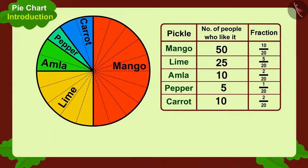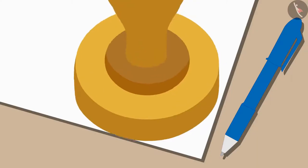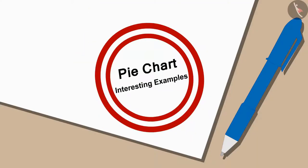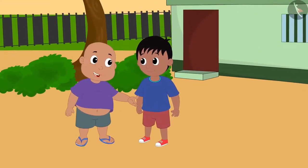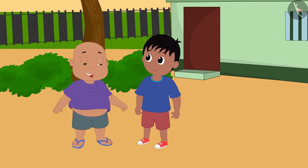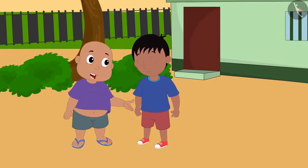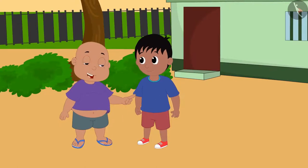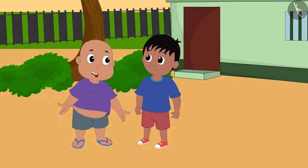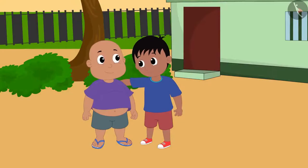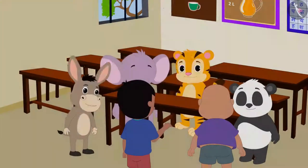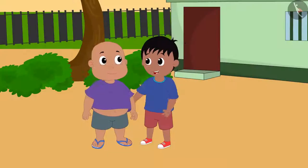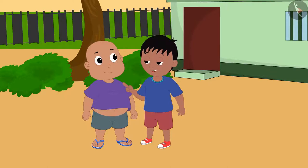Hello children! In the last video we learned about the pie chart. In this video we will learn more about it with some interesting examples. Mrs. Khan has told Raju that all the children have to wear the same color shirt for the school's annual festival. She has asked him to find out which color is most liked by the children. We will ask all the children to choose the color they like, make a chart of this information, and find out which color is most popular.